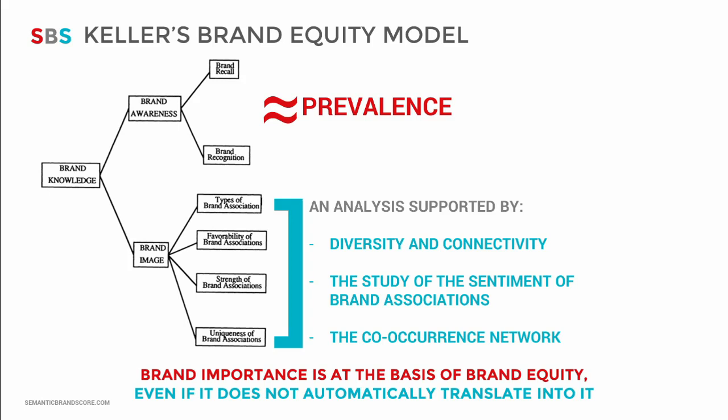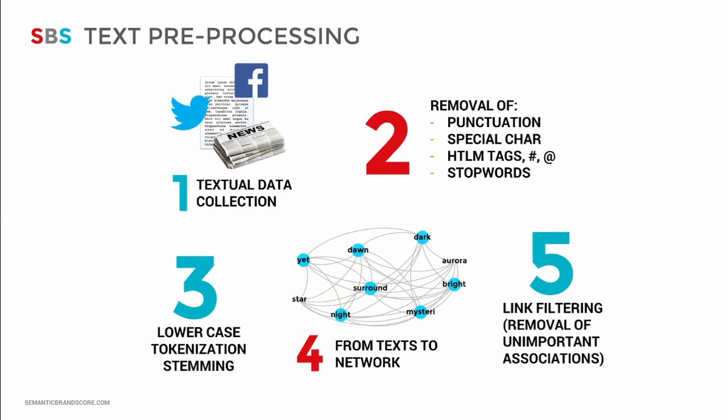The SBS indicator can also be observed together with other measures like sentiment, which however was intentionally excluded from the main index. For calculation, we use the SBSBI web app, accessible from the website semanticbrandscore.com. We also share Python tutorials on platforms like Medium for those who like programming. The first step is data collection — any textual data downloaded through the app or given as input. Then we apply basic text preprocessing: removing punctuation, special characters, and stop words, followed by tokenization and the removal of word affixes through stemming or lemmatization.